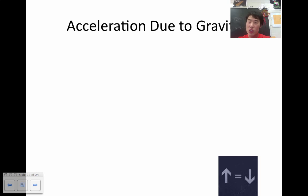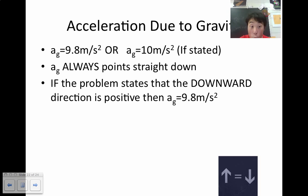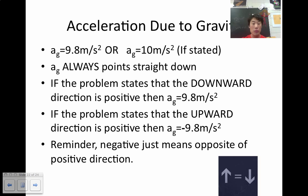Acceleration due to gravity, let's try to figure this one out. The official value for acceleration due to gravity that we'll use in my classroom is 9.8 meters per second squared or 10 meters per second squared if stated. So, if the word problem says use 10 meters per second squared, don't get all confused. Don't think that we're on a different planet. They just rounded. It makes the math a little bit easier. Another note is that acceleration due to gravity always points straight down. So, if the problem states that anything moving down is positive, then you use positive 9.8 meters per second squared. But if the problem states that anything going up is positive, then you use negative 9.8 meters per second squared. Reminder, negative is just the opposite direction of positive. Doesn't mean that it's sad or happy.